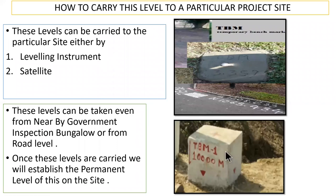Now how to carry all this level. We saw how this permanent benchmark is established with reference to the mean sea level. Now how to carry all these things to my site. These levels are carried to the particular site either by leveling instrument or with the help of satellite. This leveling instrument can be an auto level or even a total station. Let us say you are in Bangalore and from the railway station, the construction site is somewhere close to around one kilometer.